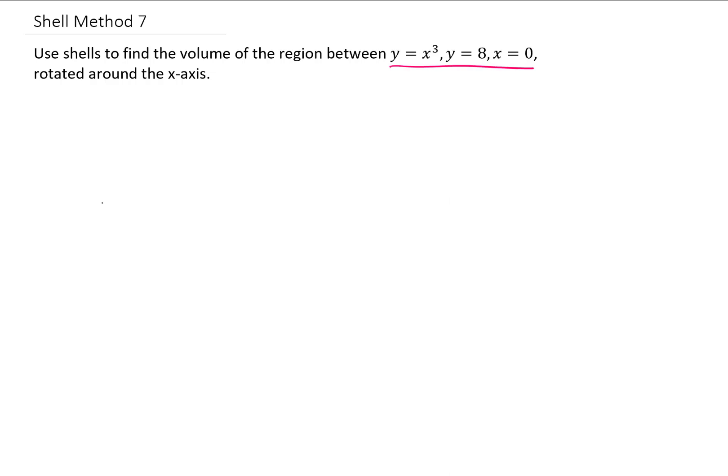We're going to take a look at this region. We're going to rotate that region about the x-axis, and we're going to use the method of shells to find that volume. Let's take a look at the graph. Y equals x cubed looks something like this. Y equals eight is up here. X equals zero is the y-axis here. So the region we're looking at is this one.